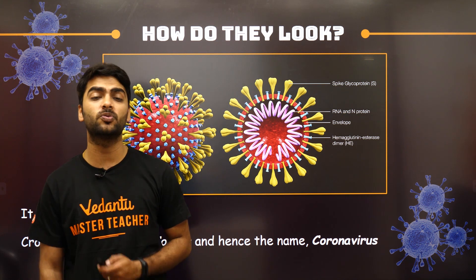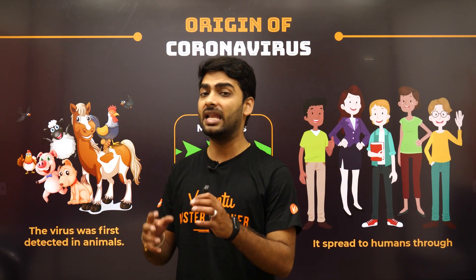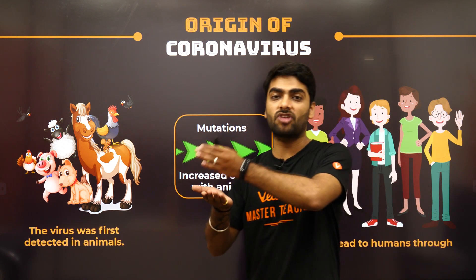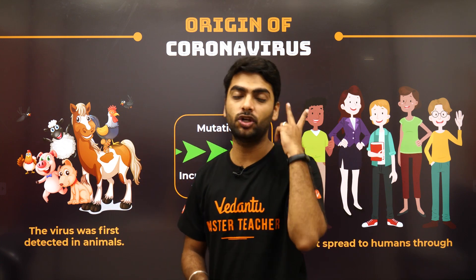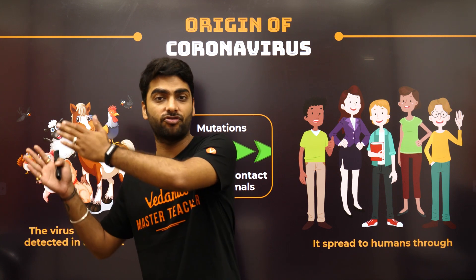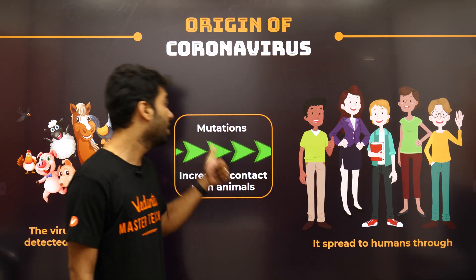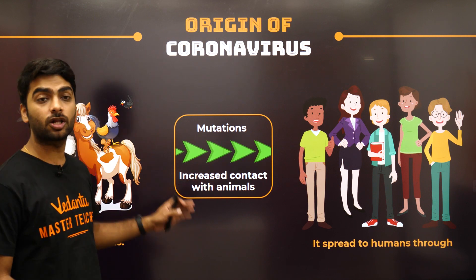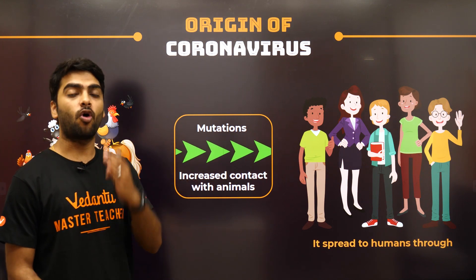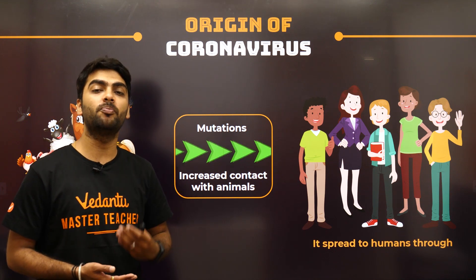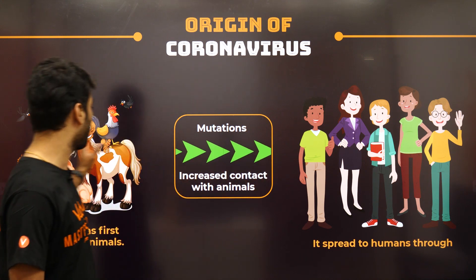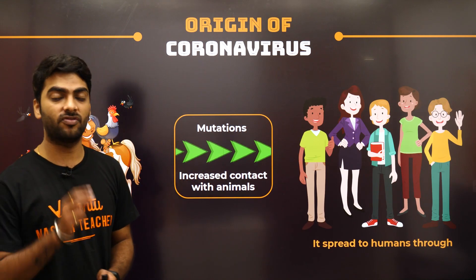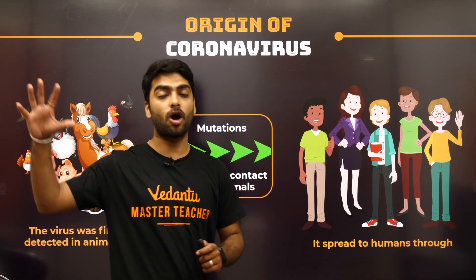The virus is very minute — you cannot see it with the naked eye. It was first found in animals, and it traveled from animals to humans for two reasons: one, because of mutation, where the virus underwent changes that allowed it to inhabit the human body; and two, very close contact with animals, which caused the virus to develop itself in the human body as well.